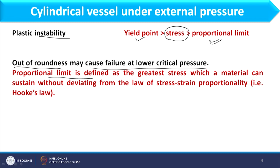The proportional limit is defined as the greatest stress which a material can sustain without deviating from the law of stress and strain proportionality. Basically, when the material follows Hooke's law it is below the proportional limit. Failure is essentially occurring due to irregularity in the geometry.